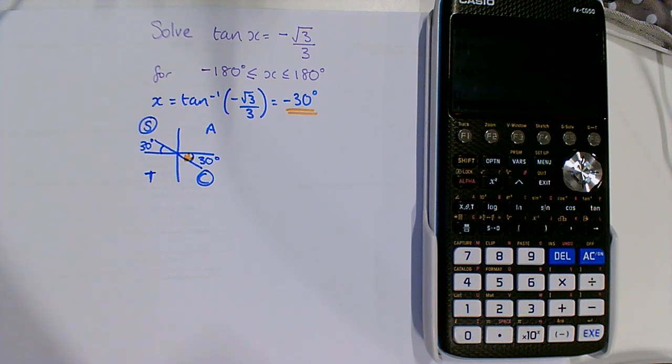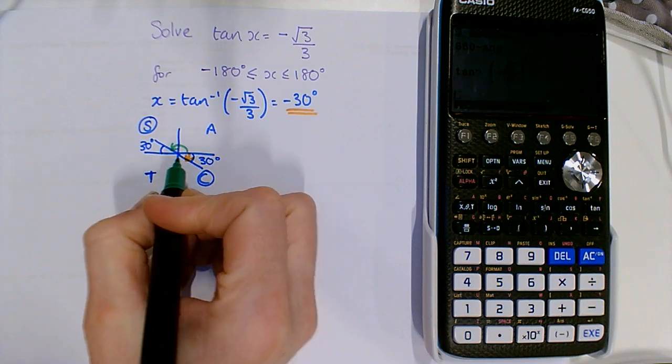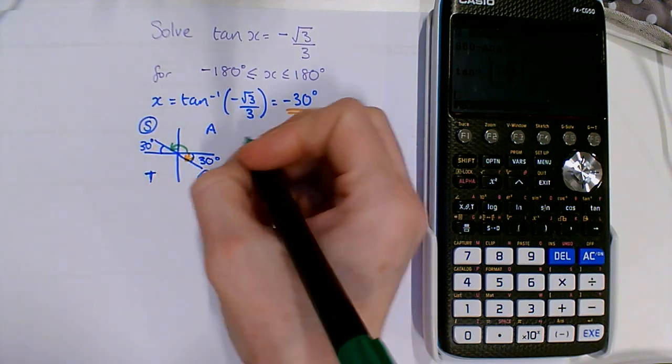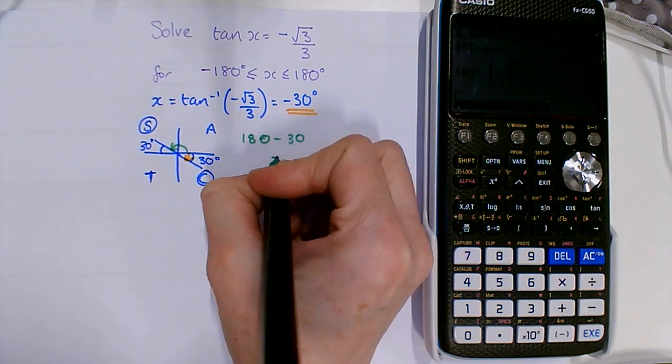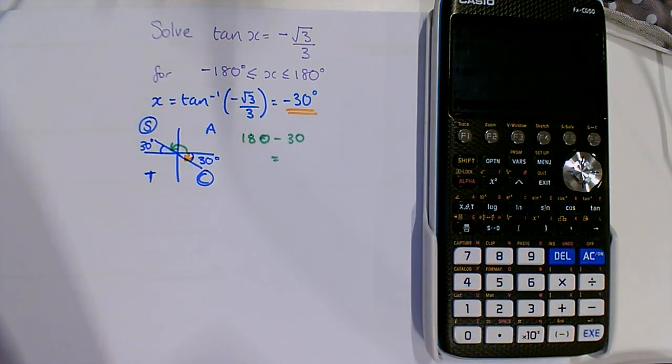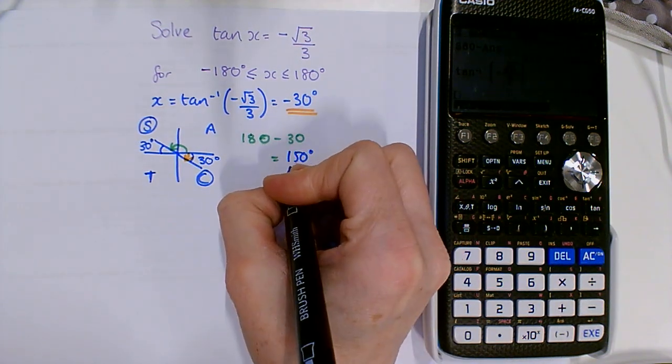And now we're going to go the other direction—the positive direction from zero until I hit a stick. So I've hit one here, and this green angle would be 180 minus 30, which is going to give me 150 degrees.